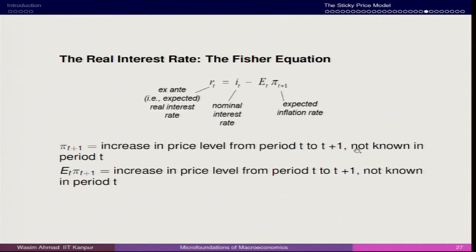The increase in price level from t to t+1 is not known in period t — it is about expectation. So expectation of πt+1 is formed in period t. Because of this expectation, the Fisher equation yields the expected real interest rate: the nominal interest rate minus the expected inflation that consumers are expecting in the current period about future inflation. This can be linked to the adaptive expectations scenario, which will come later.